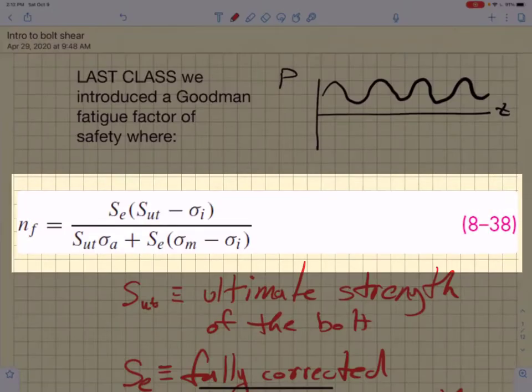In the last class, we introduced a Goodman fatigue factor of safety, which was given by equation 838, shown here.